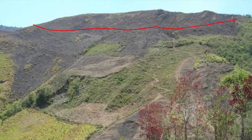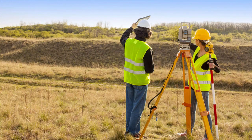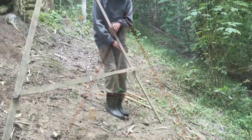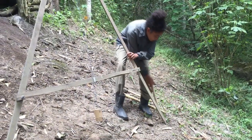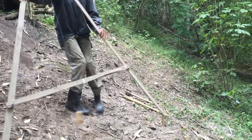A contour line connects all the points at the same level, at the same altitude on a slope. So actually we're setting out a horizontal line on the slope — not one horizontal line, but consecutive lines on the slope. We can do this with expensive topographical material, or we can do it with a simple A-frame that you can construct yourself. I'm not elaborating here on the construction and use of A-frames because you can find all the information on the internet.